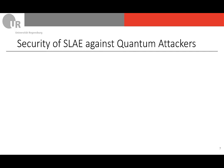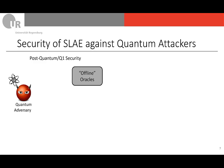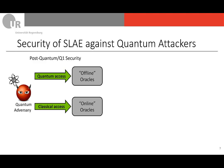Now we are interested in the security of SLAY against quantum attackers. On the one hand we look at post-quantum or Q1 security: a quantum adversary gets access to offline oracles and online oracles. Since the adversary has quantum computing power, the offline oracles are granted quantum access, whereas for the online oracles the adversary only gets classical access. In the case of SLAY, the offline oracles are the transformation ρ underlying the sponge construction, whereas the online oracles are provided by the challenger — for instance, everything that involves the key.